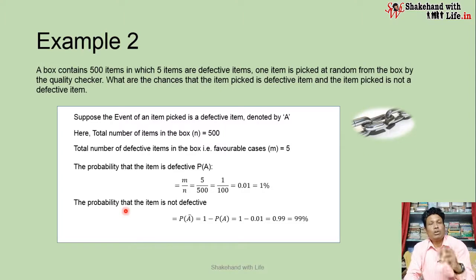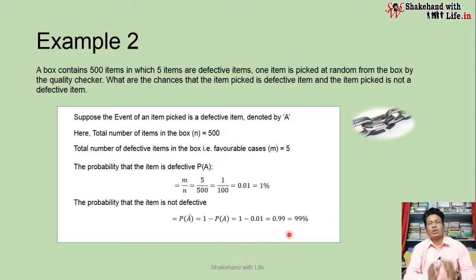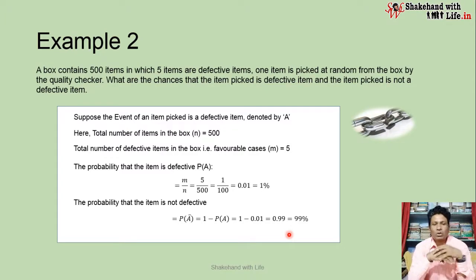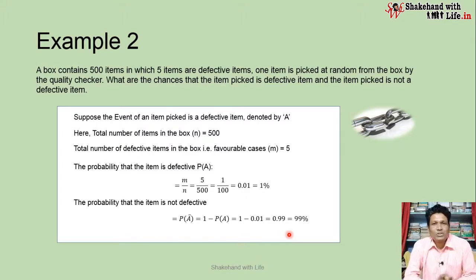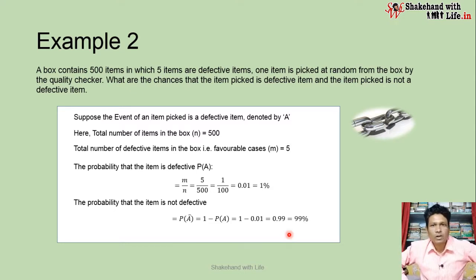And the probability that the item is not defective: P(A bar) = 1 minus P(A) = 1 minus 0.01 = 0.99, which is 99%. So when a quality checker picks an item from the box and it is not defective, the probability is 99%. This is the classical approach — when we have equal chances in a game or similar situation, we apply this fundamental approach of probability.